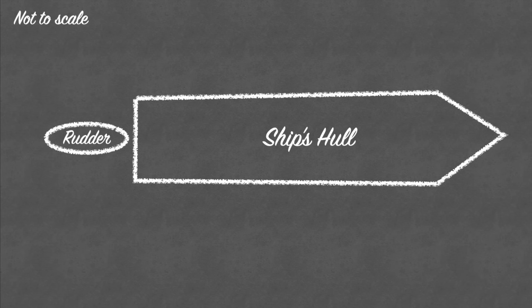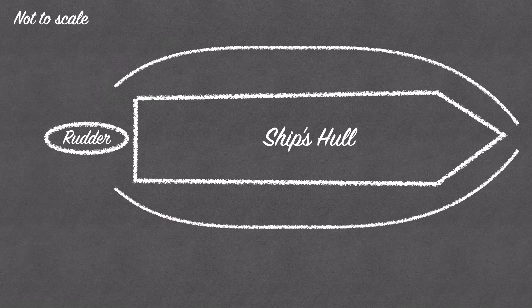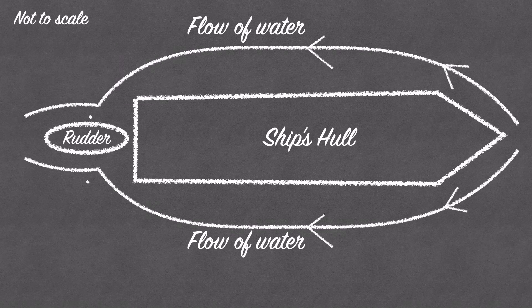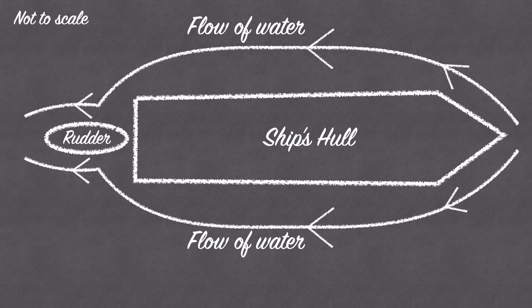As the vessel moves forward through the water, a flow of water moves from front to back, or from bow to stern, and across both sides of the rudder.